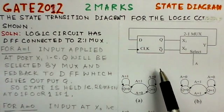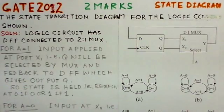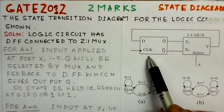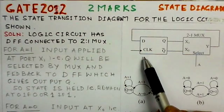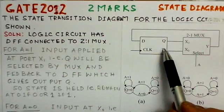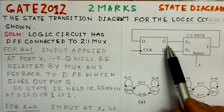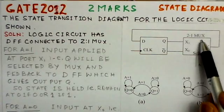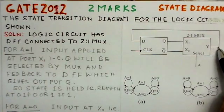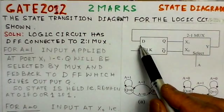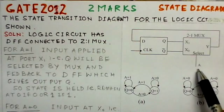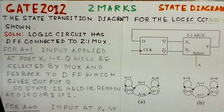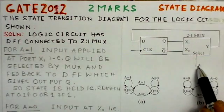This logic circuit has one D flip-flop, which is positive-edge triggered, with outputs Q and Q-bar connected to the two inputs of a 2-to-1 multiplexer. Y is the output from the multiplexer, which is fed back to the D input of the flip-flop. A is the select input for the multiplexer, which can take value 0 or 1.